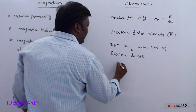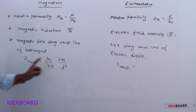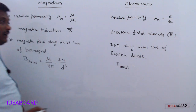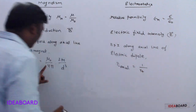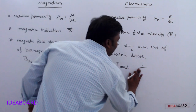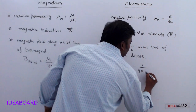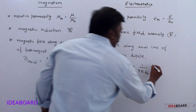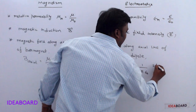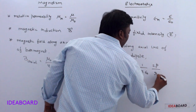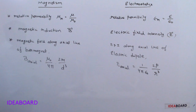For the axial line of an electric dipole, E_axial = (1/4πε₀) × (2P/R³). Here, μ₀/4π is replaced by 1/(4πε₀), the magnetic dipole moment M is replaced by electric dipole moment P, and distance d is replaced by R.